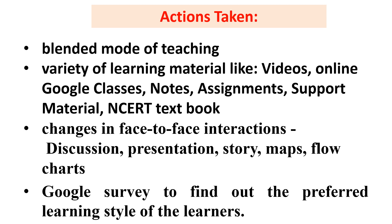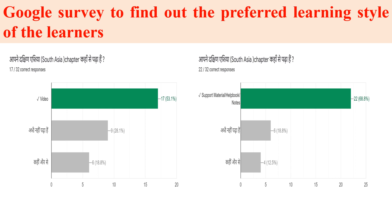During the action research, I also used tools such as Google survey and random survey to find out the preferred learning style of my learners. Regular assessments were used to measure the performance of students from time to time. Class teachers and subject teachers were consulted at various occasions to explore the reasons for low performance of three learners.